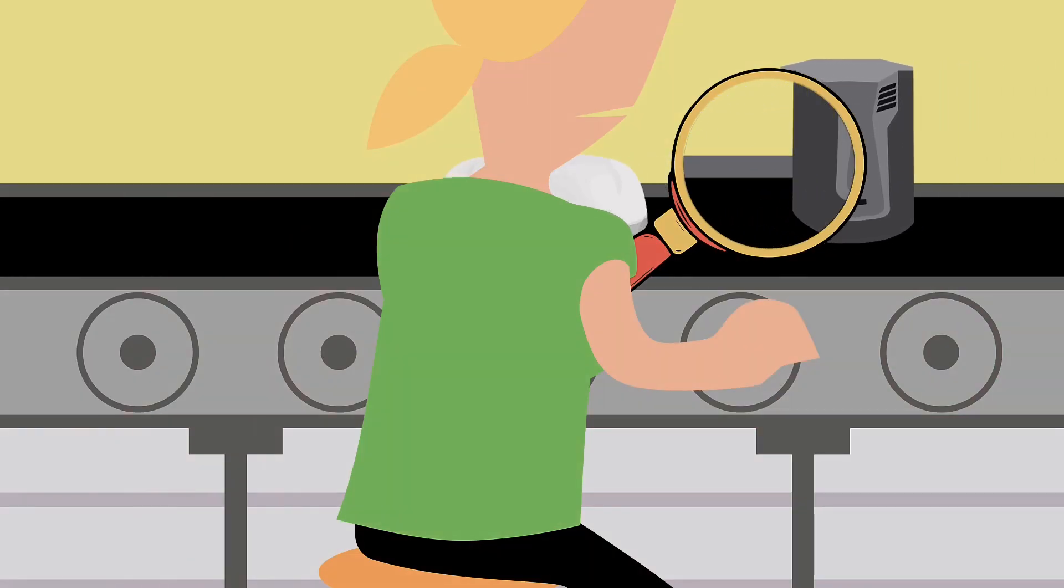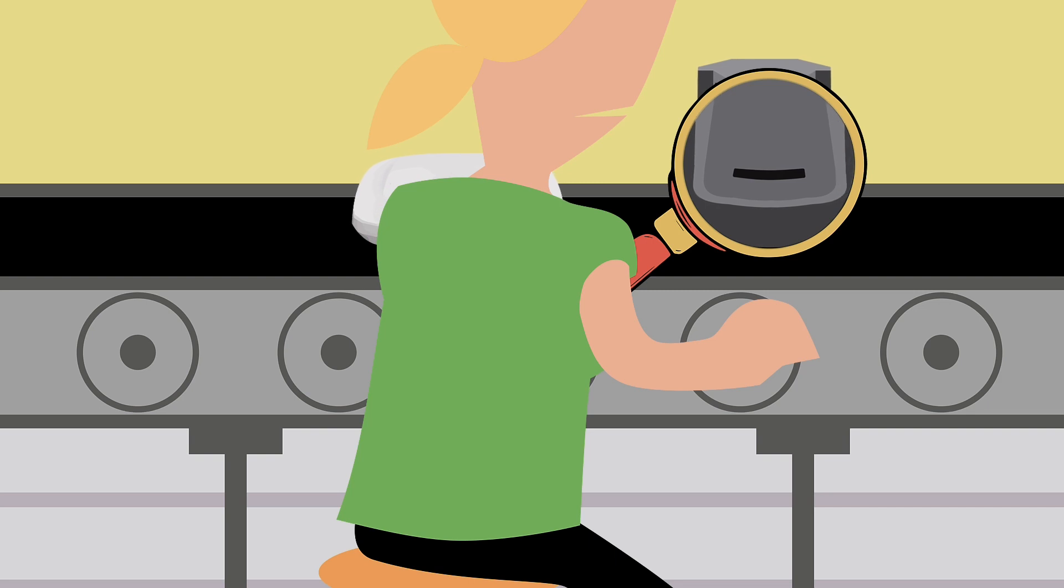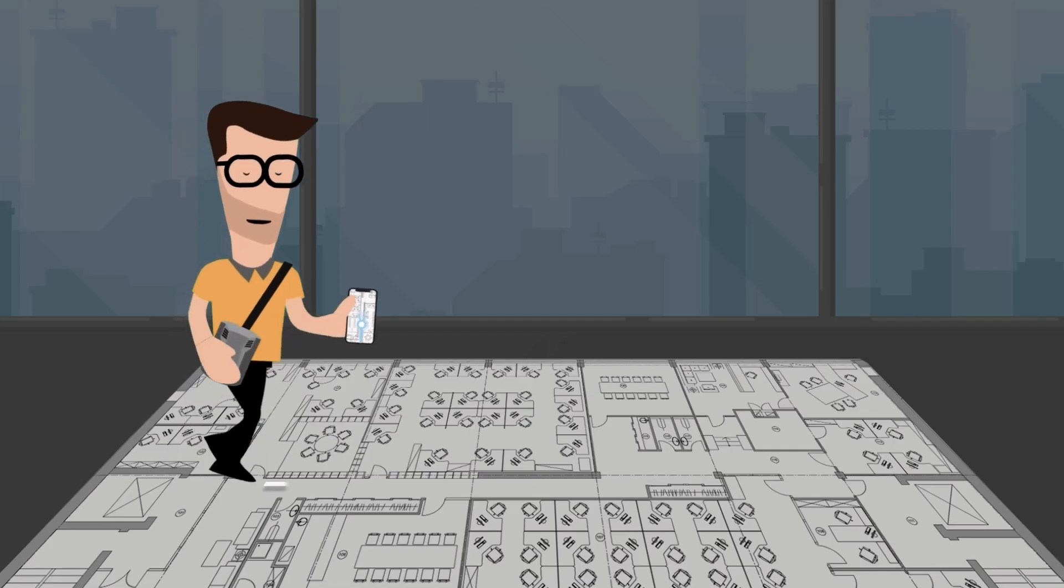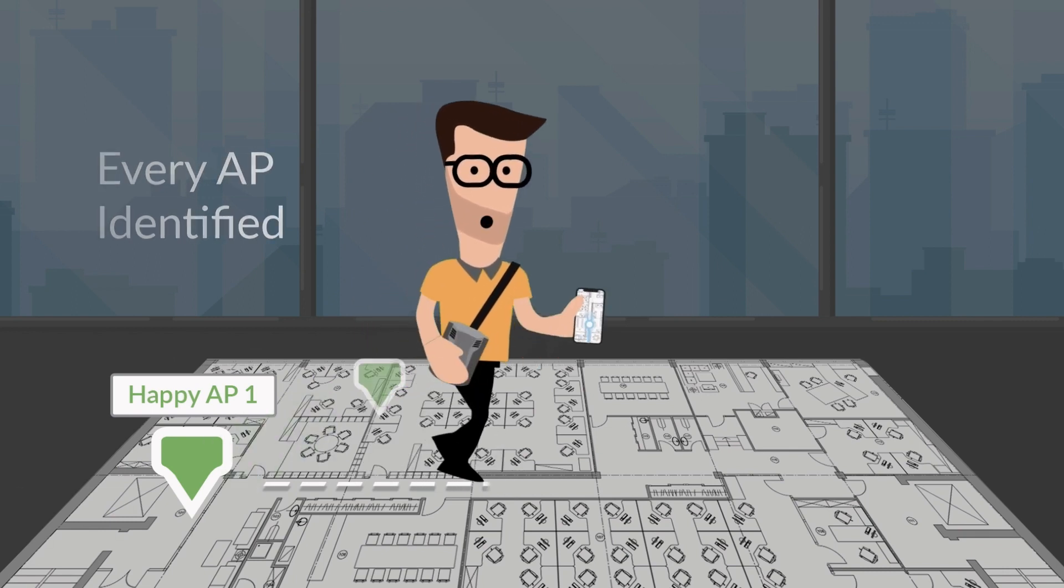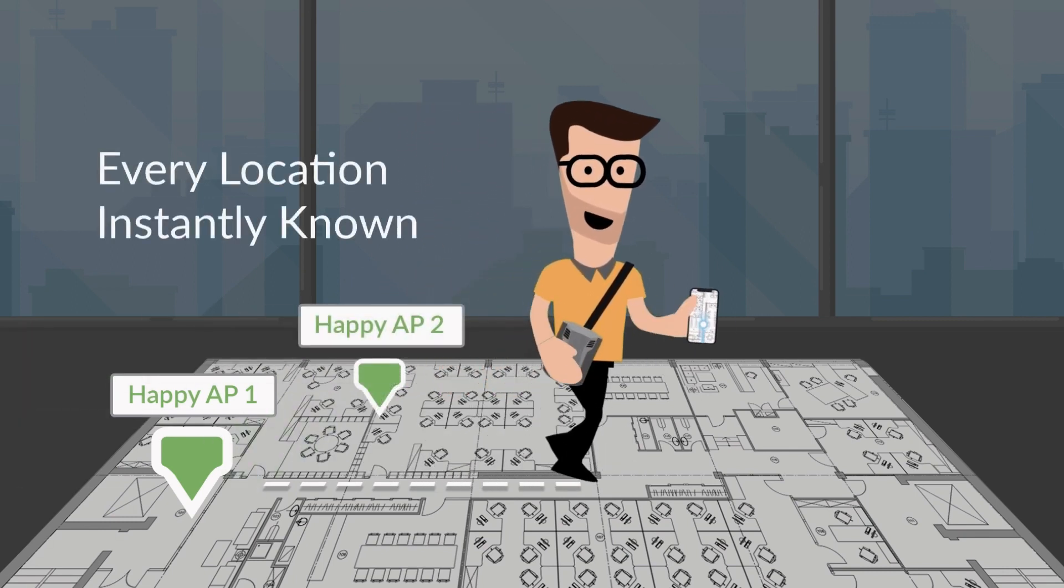Put down the magnifying glass, pick up your sidekick, and go for a walk. While you take a tour of the facility, your sidekick not only accurately collects and plots the location of every single AP in your inventory.